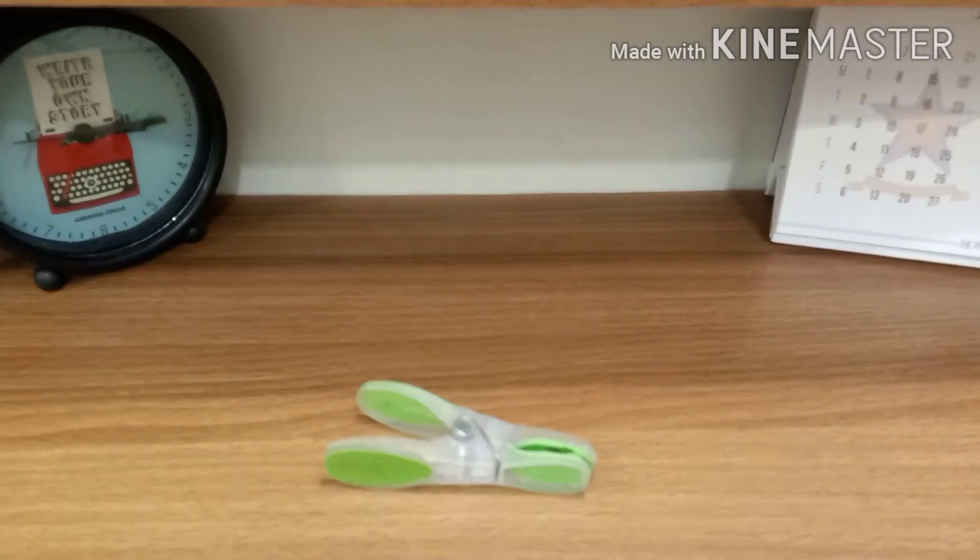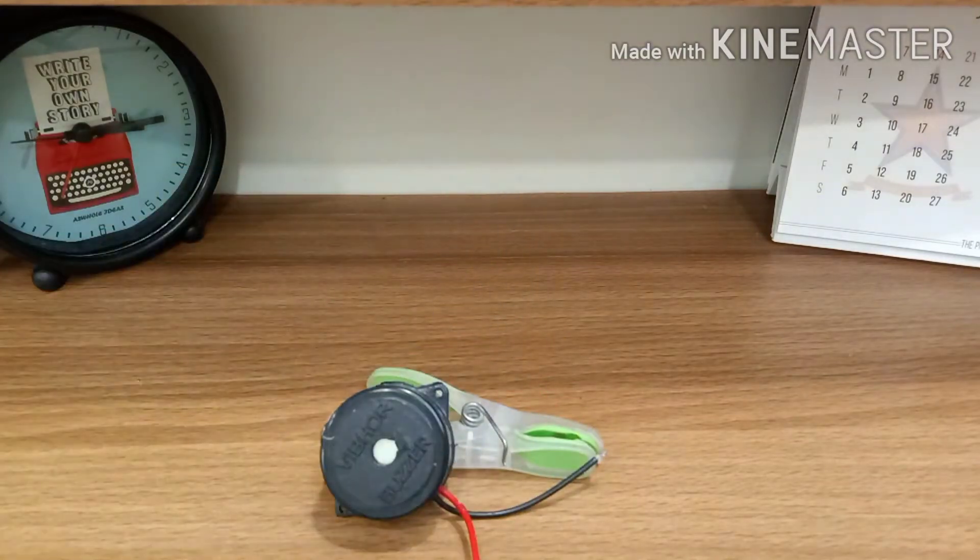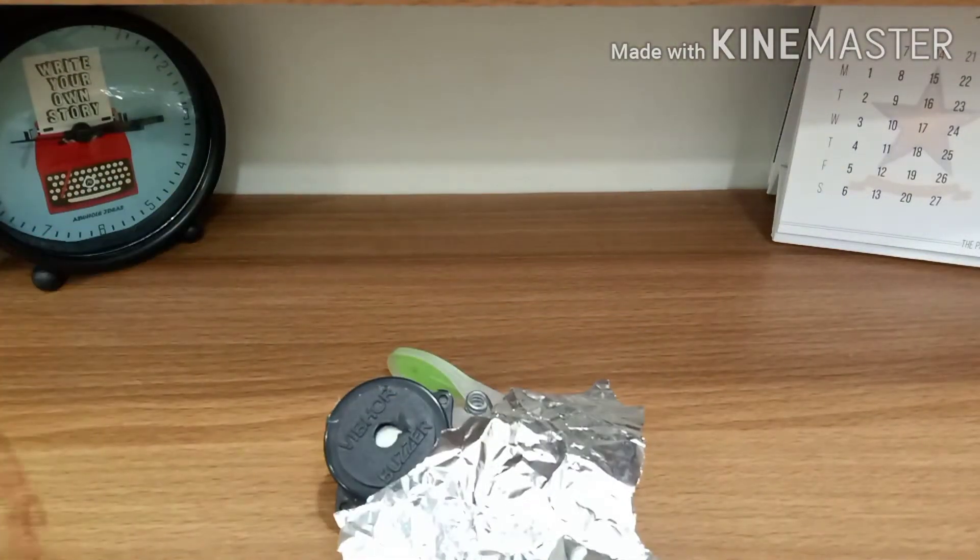Hello, welcome to my channel. Today I'm going to tell you how you can create a door alarm. Like and subscribe for more such videos. So let's start. You will need a plastic clip, buzzer, aluminium foil, and a battery with connected wires.